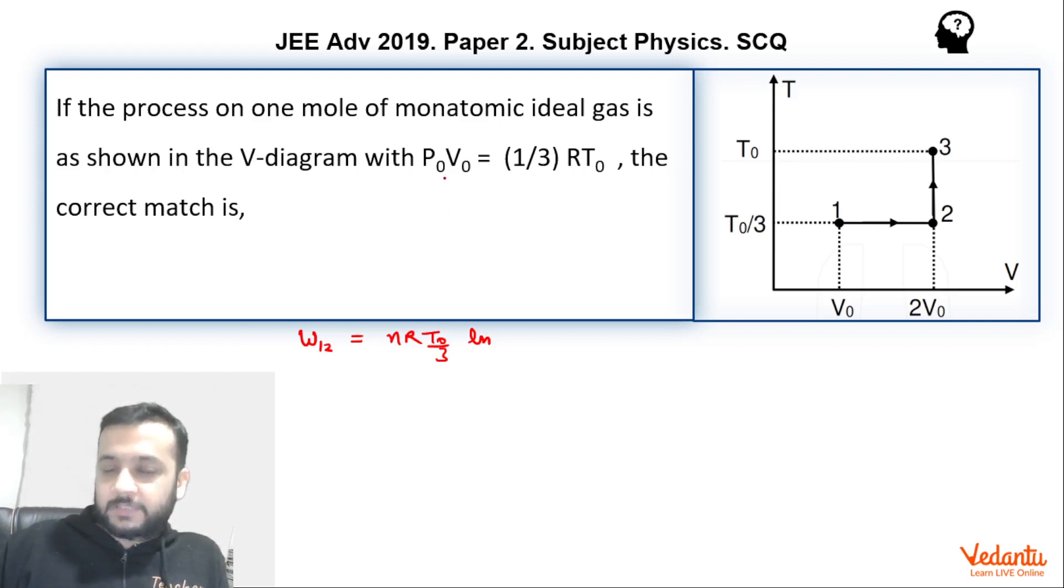That means when the pressure is P0, volume is V0, then the temperature is T0/3. Remember, temperature will not be T0. So this was a slight catch in this question. When pressure is P0, volume is V0, then the temperature is T0/3. T0 is not. Because moles is one. So this is a catch here.